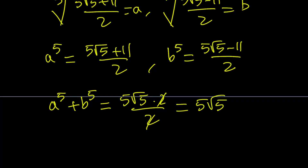So we have two numbers whose sum of fifth powers equals 5√5. If we can find another equation for a and b, then we should be able to solve this as a system. That's the whole idea. The second method is different from this.